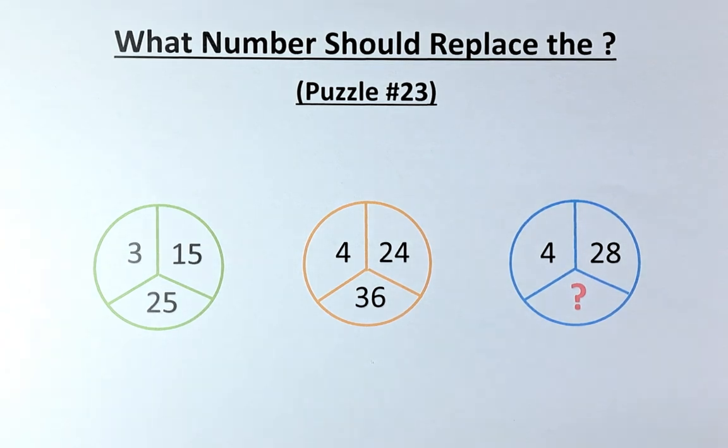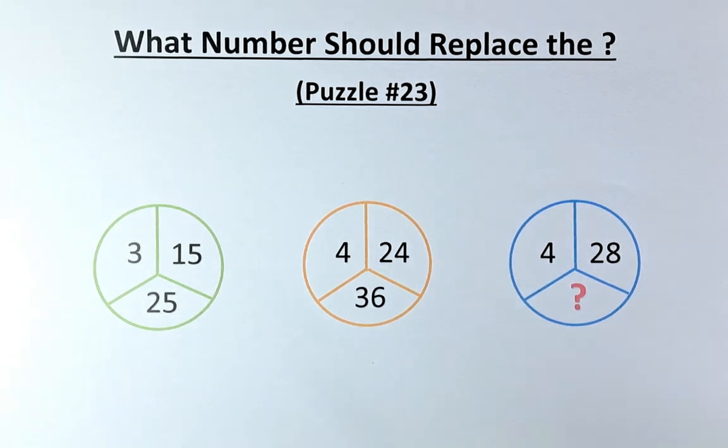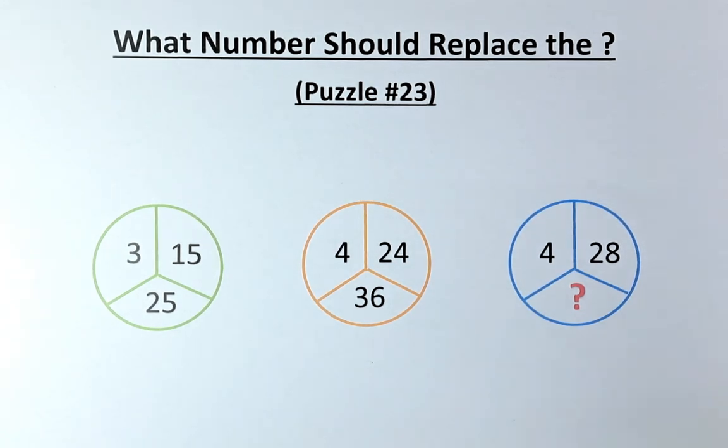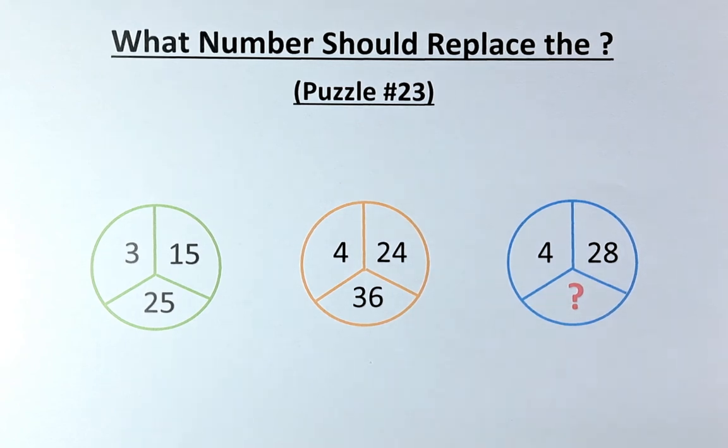So, looking at this puzzle, normally people would like to take 3 and 15 to be equal to 25. Same as 4 and 24 give you 36 and 4 and 28 to get the question mark. Similarly, we're going to do that in this case. But before we can do that, we need to do one operation first.